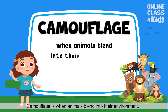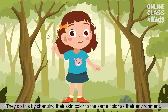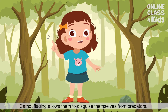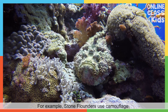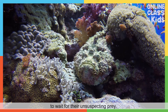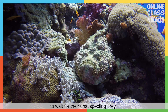Camouflage is when animals blend into their environment. They do this by changing their skin color to the same color as their environment. Camouflaging allows them to disguise themselves from predators. For example, stone flounders use camouflage to wait for their unsuspecting prey.